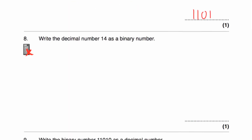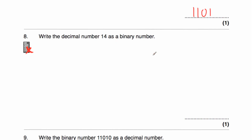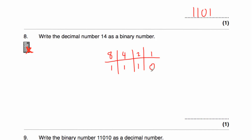Question eight says, write the decimal number 14 as a binary number. Start with 1, then 2, then 4, then 8 — and 16 would be too big. Put our columns in. To get 14: that's an 8, and a 4 — that's 12, and a 2 — that's 14. We don't need any 1s. So the number 14 as a binary number is 1110, because 8 plus 4 is 12, plus 2 equals 14.